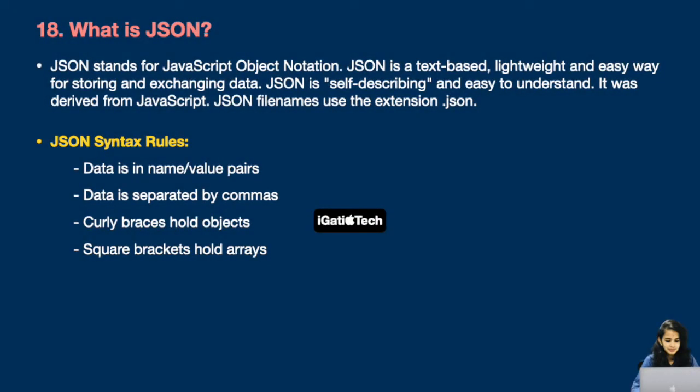Next question: What is JSON? JSON stands for JavaScript Object Notation. JSON is a text-based, lightweight, and easy way for storing and exchanging data. JSON is self-describing and easy to understand. It was derived from JavaScript. JSON file names use the extension .json. Some rules of JSON syntax: data is in name/value pairs, data is separated by commas, curly braces hold objects, and square brackets hold arrays.